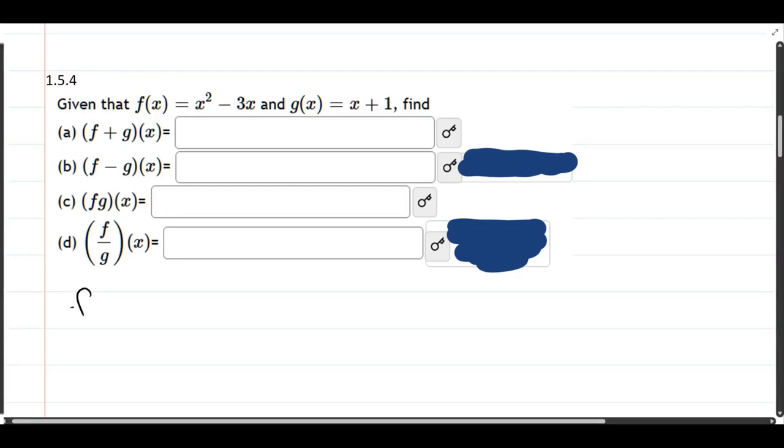So that's f minus g of x. And the way you do this is f of x minus g of x. And there's really nothing to do here because you're plugging in x.